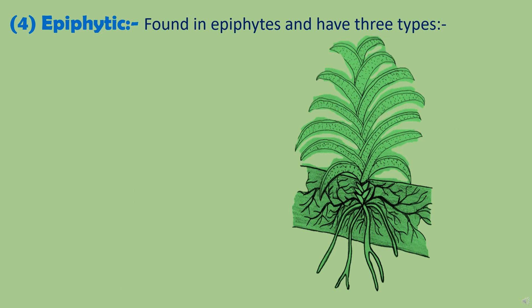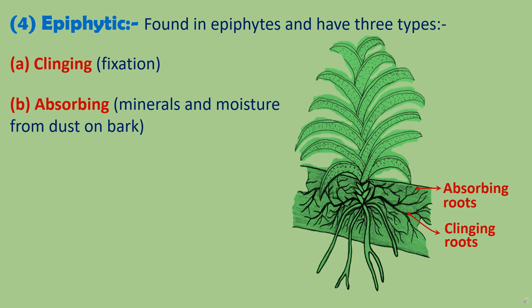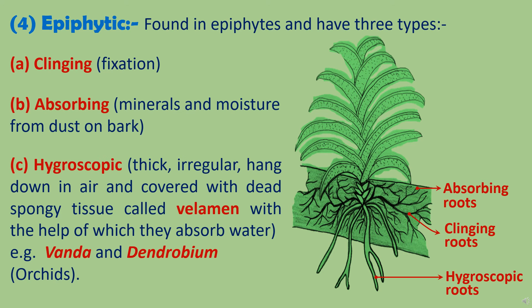The fourth type of modified adventitious roots are epiphytic roots. As the name suggests, these roots are found in epiphytes — plants that grow on other plants. Epiphytes mainly have three types of roots. The first type is clinging roots, which help in fixing the plant to the substratum. The second type is absorbing roots, which absorb water and minerals from soil particles deposited on the bark of the tree. The third type found in epiphytes are hygroscopic roots. These roots are thick, irregular in shape, and hang down in the air from the plant. They are covered with a whitish dead spongy tissue called velamen, and with the help of velamen they absorb water from air, rain, and dew drops. Such roots are found in orchid plants — examples are Vanda and Dendrobium.